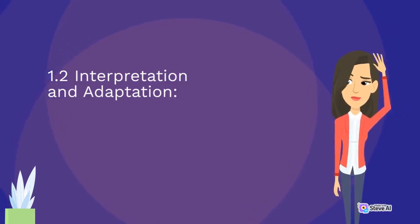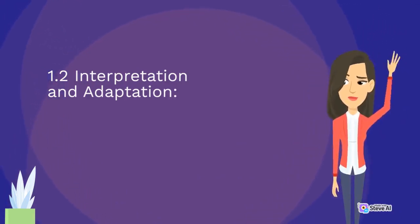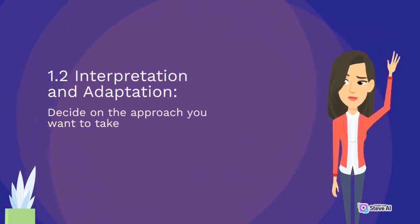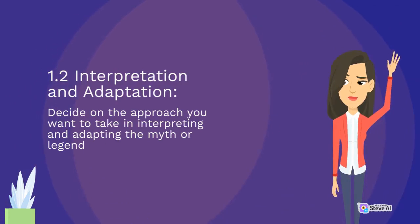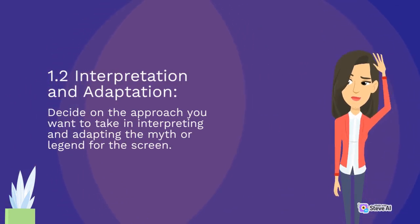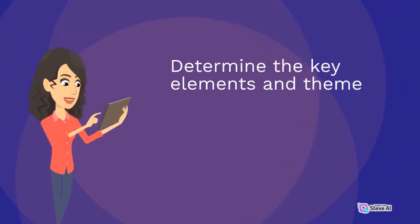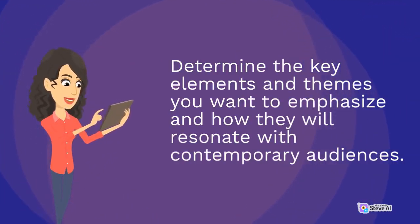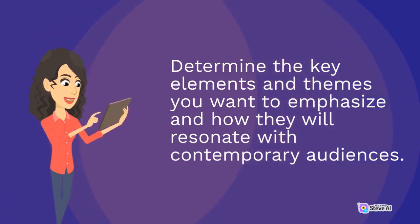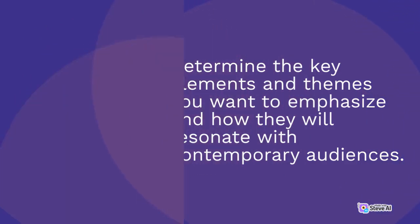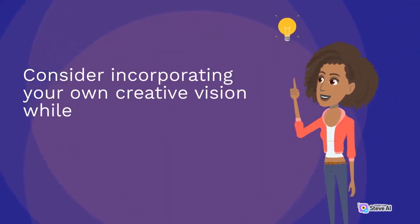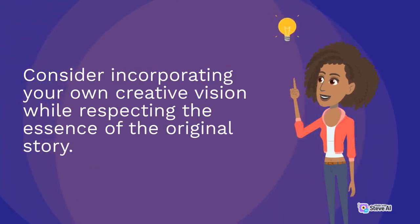1.2 Interpretation and Adaptation. Decide on the approach you want to take in interpreting and adapting the myth or legend for the screen. Determine the key elements and themes you want to emphasize and how they will resonate with contemporary audiences. Consider incorporating your own creative vision while respecting the essence of the original story.